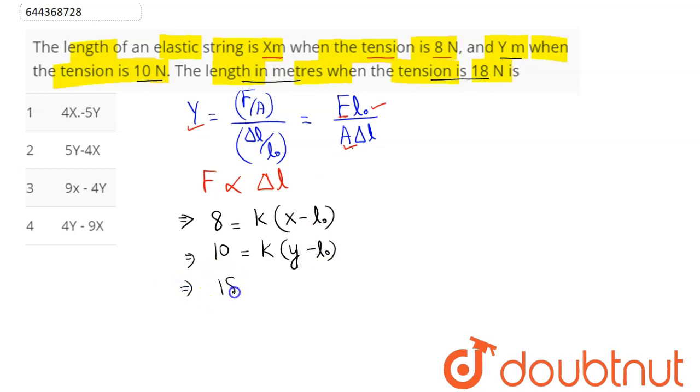And on 18 N, we say here the new length becomes suppose our Z. So this becomes K into Z minus L0.